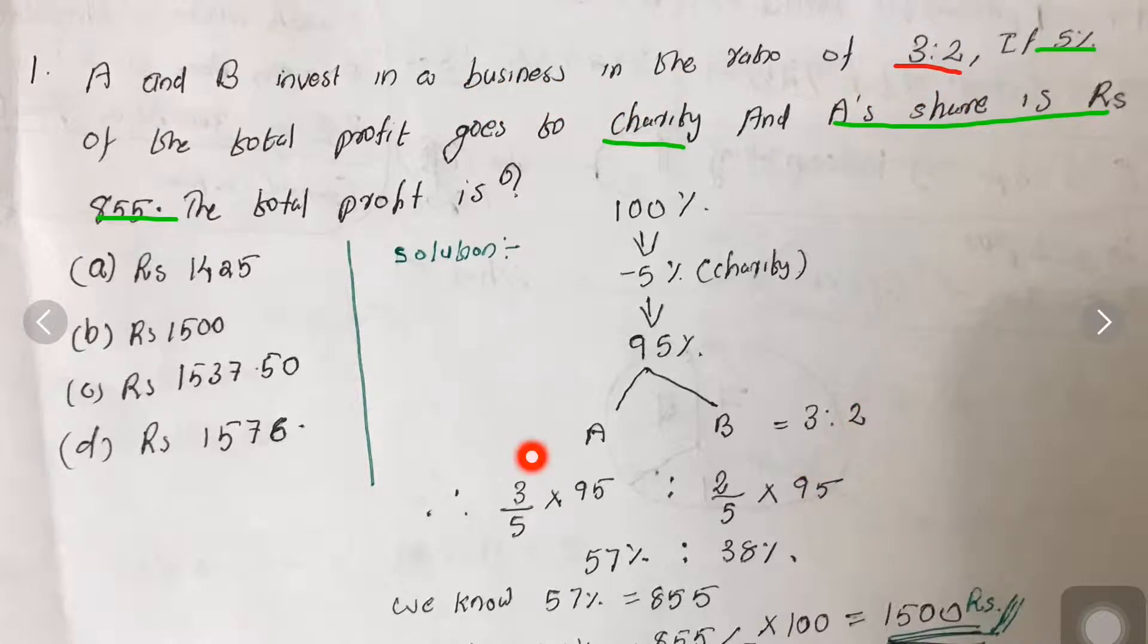We have to find out 95% of A and 95% of B according to the ratio. A's ratio is 3, B's ratio is 2. So 3/5 × 95 will give A's amount percentage, and 2/5 × 95 gives B's percentage.